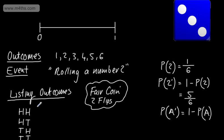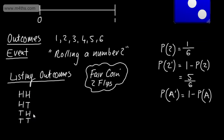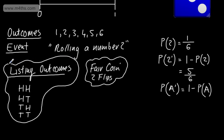We could continue: head, head, head, and so on and so forth. We have a systematic approach and we list the outcomes. This can be really helpful later on when we're looking at some of the probability laws. So if I was asked to find the probability that I didn't flip any heads, we would simply go straight to the tail-tail outcome. That is listing outcomes.